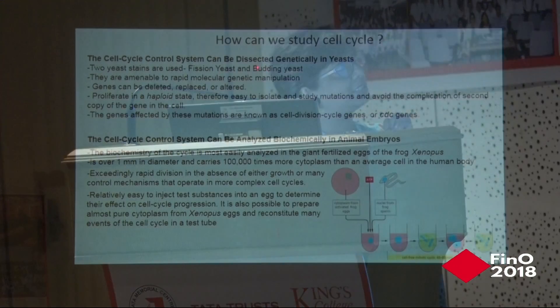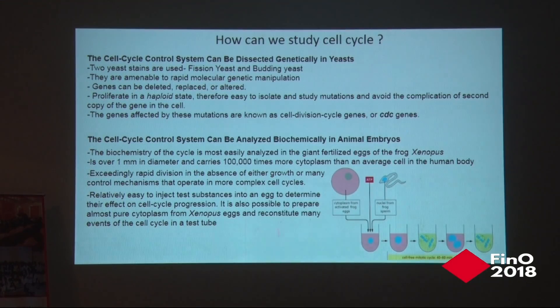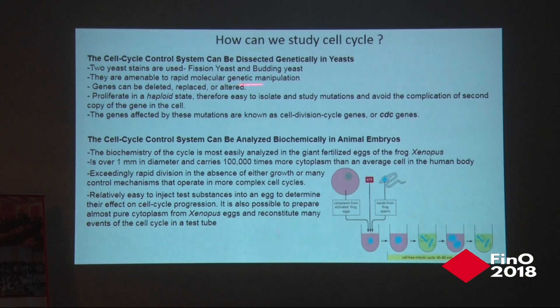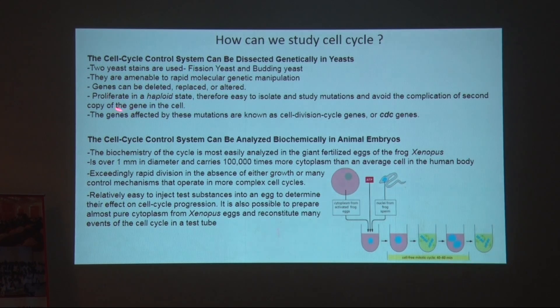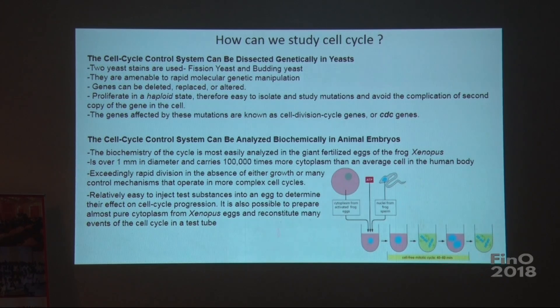How do we come to know about all these proteins involved in the cell cycle? The basic genetic study of cell cycle control is interesting because it is conserved throughout different species. Yeast has the same processes and controls as mammalian cells, so yeast is mostly used to study the genetics of the cell cycle. Two strains — fission yeast and budding yeast — can be genetically manipulated by gene deletion, replacement, or alteration. They proliferate in the haploid state with only one copy of each gene, making it easier to study mutations affecting the cell cycle.